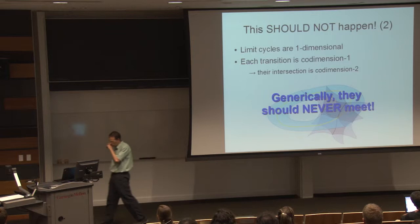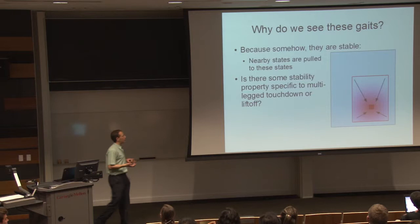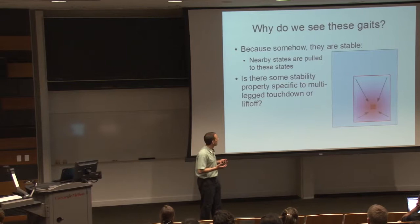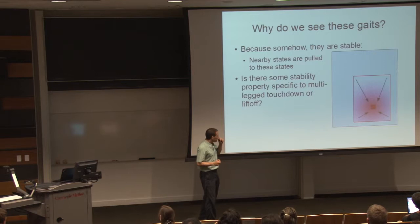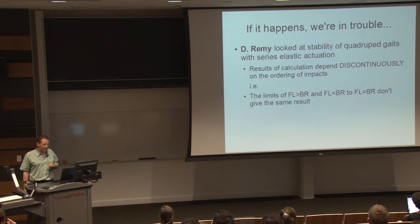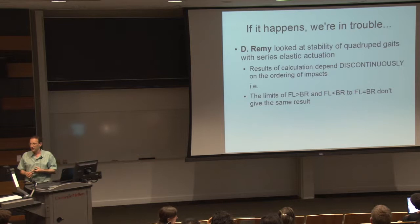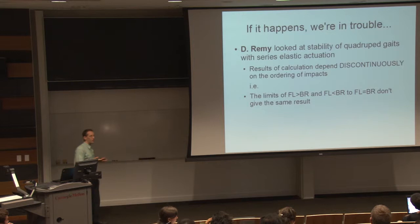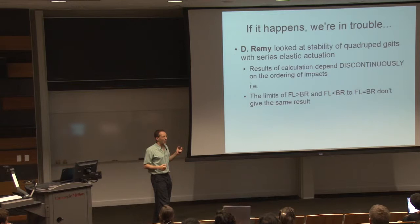So why do we see these? One reason we might see something that should generically not happen is because the phenomenon is associated with some special kind of stability — some states normally get pulled into this configuration where multiple legs hit down at once. Is there some special kind of stability associated just with simultaneous touchdown or lift-off? David Remus has a paper showing that for a series elastic actuated quadruped, the results of the calculation vary discontinuously depending on the ordering of the footfalls. If you approach the limit with one leg leading and the other lagging, then approach it the other way around, you'll get different results.